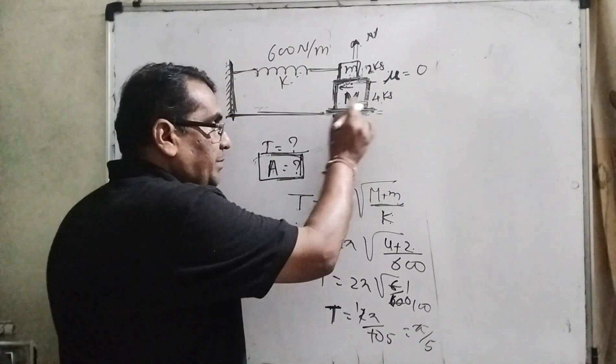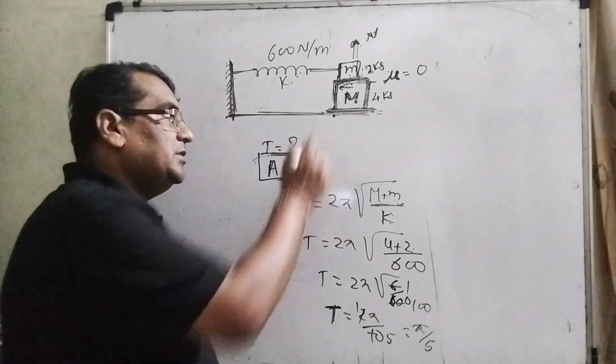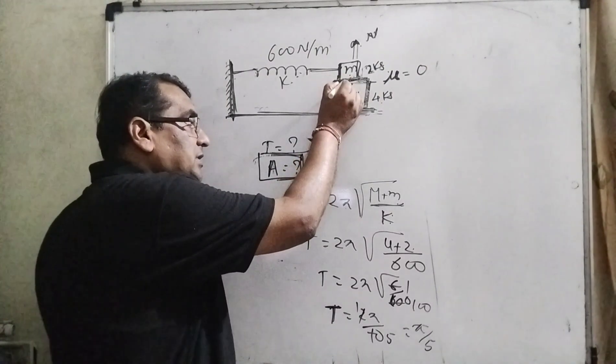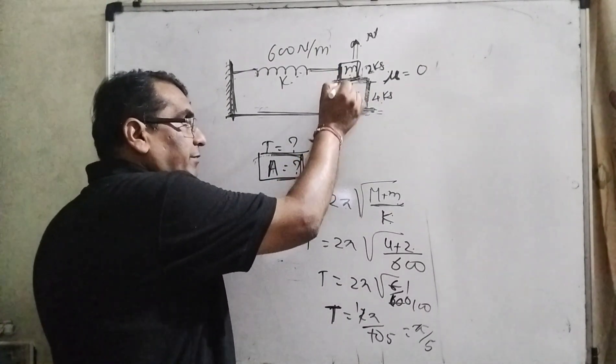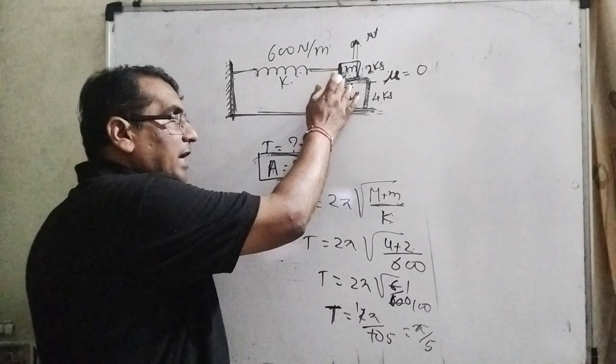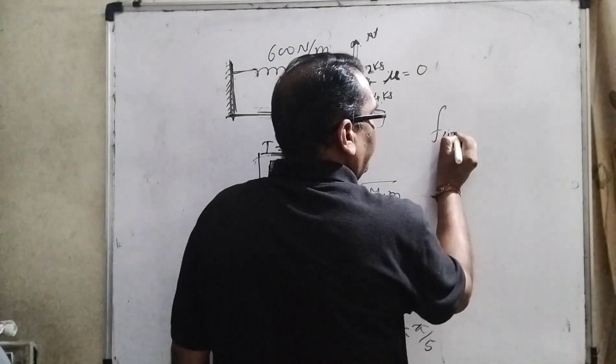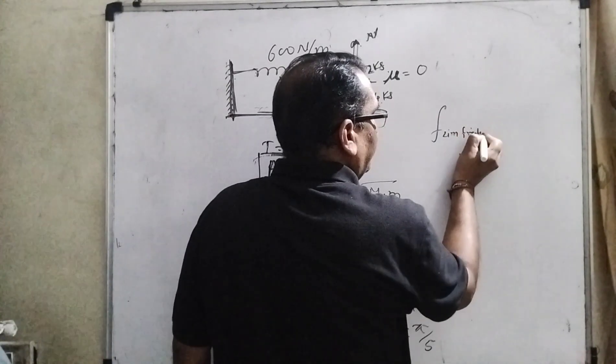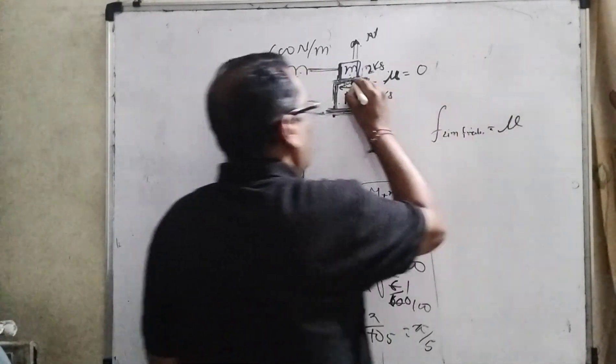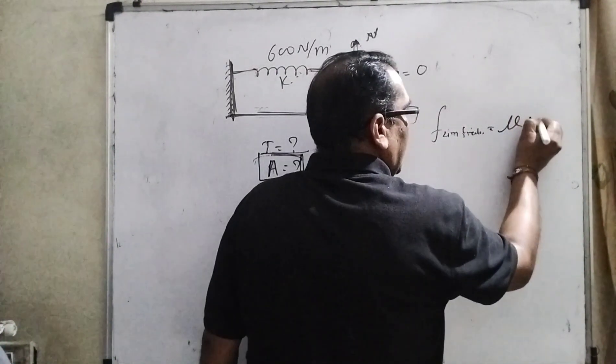The frictional force between the ground and the bigger block is zero. There is no frictional force between the ground and this bigger block. It means only because of this frictional force between the two blocks, this is acting. Therefore, limiting friction equals mu times the normal force N.